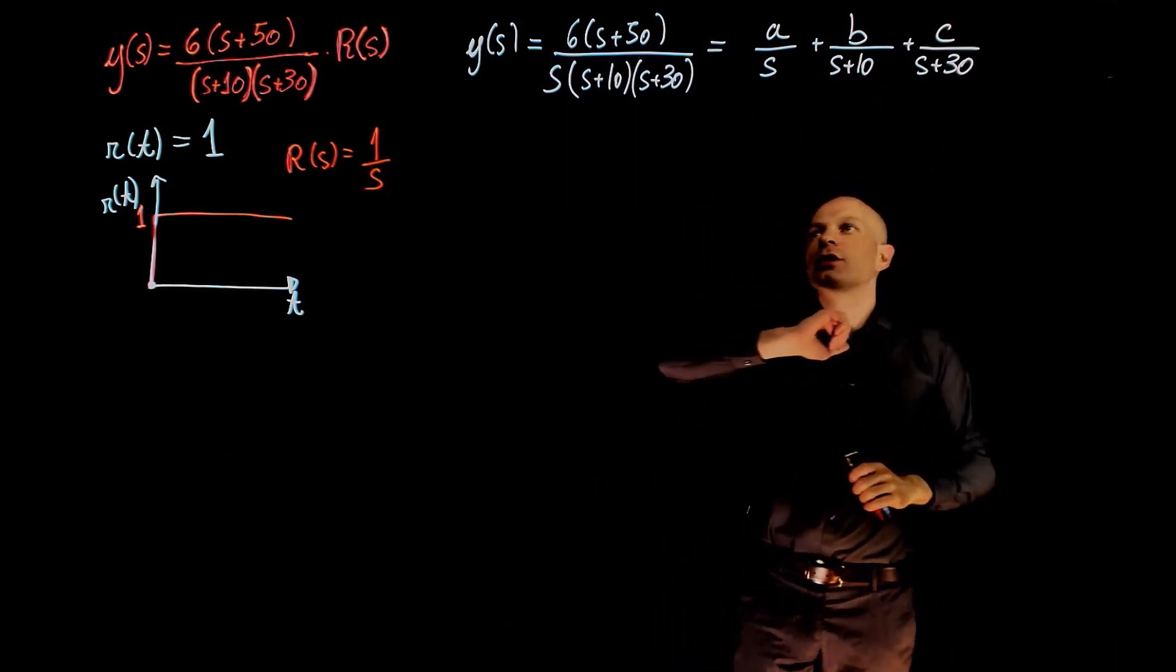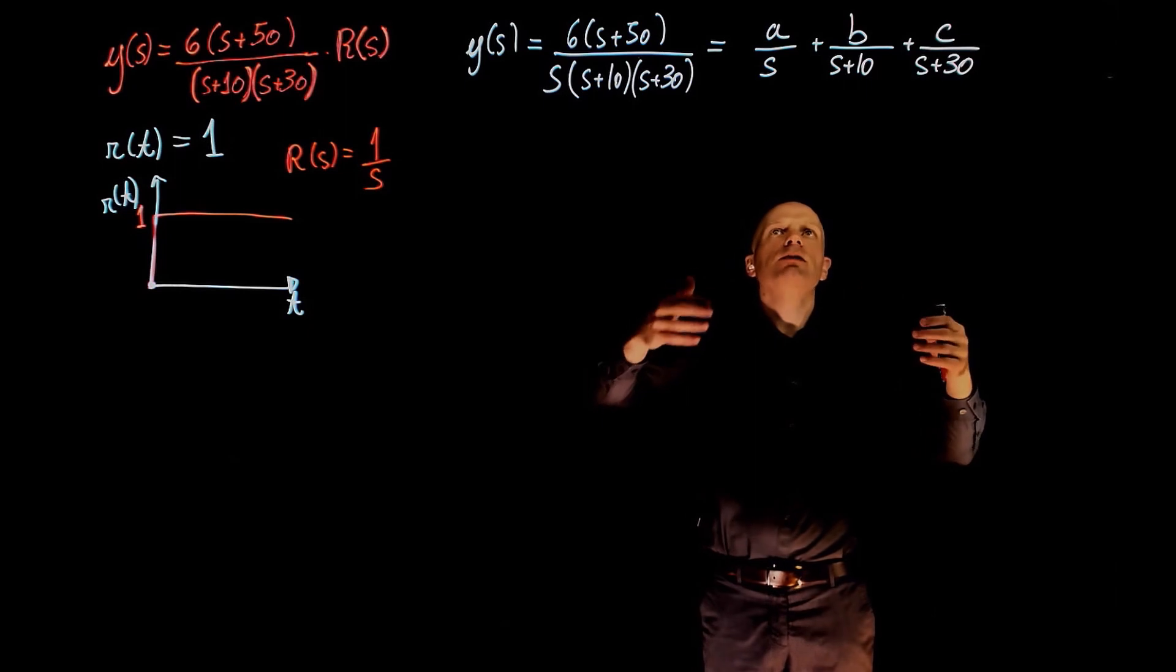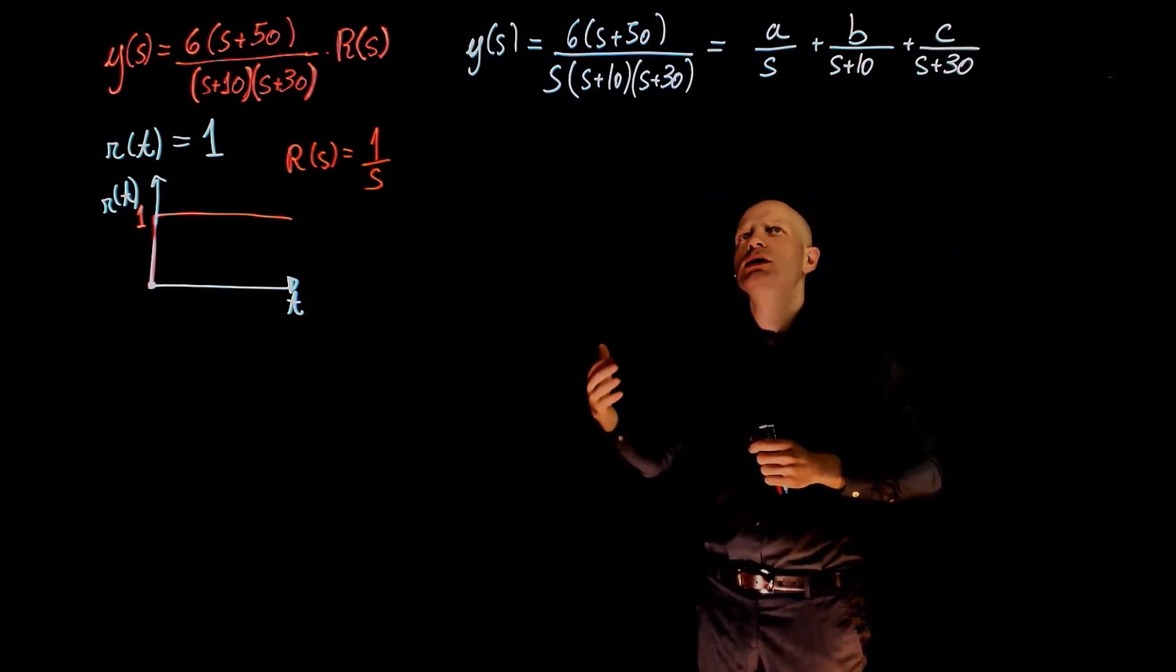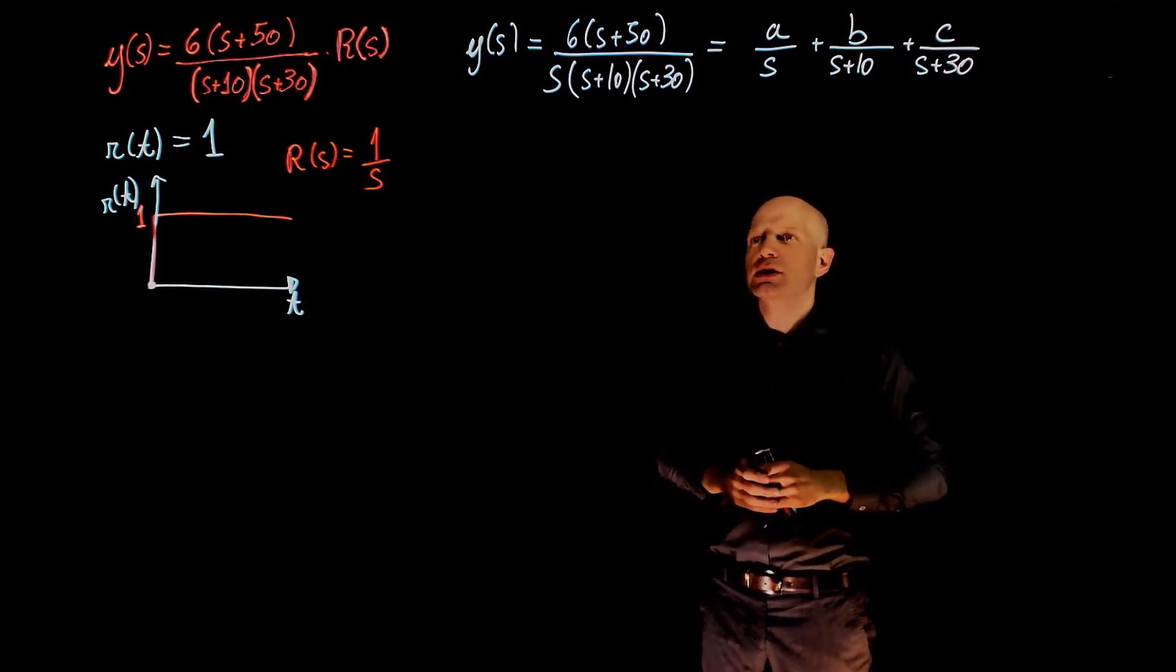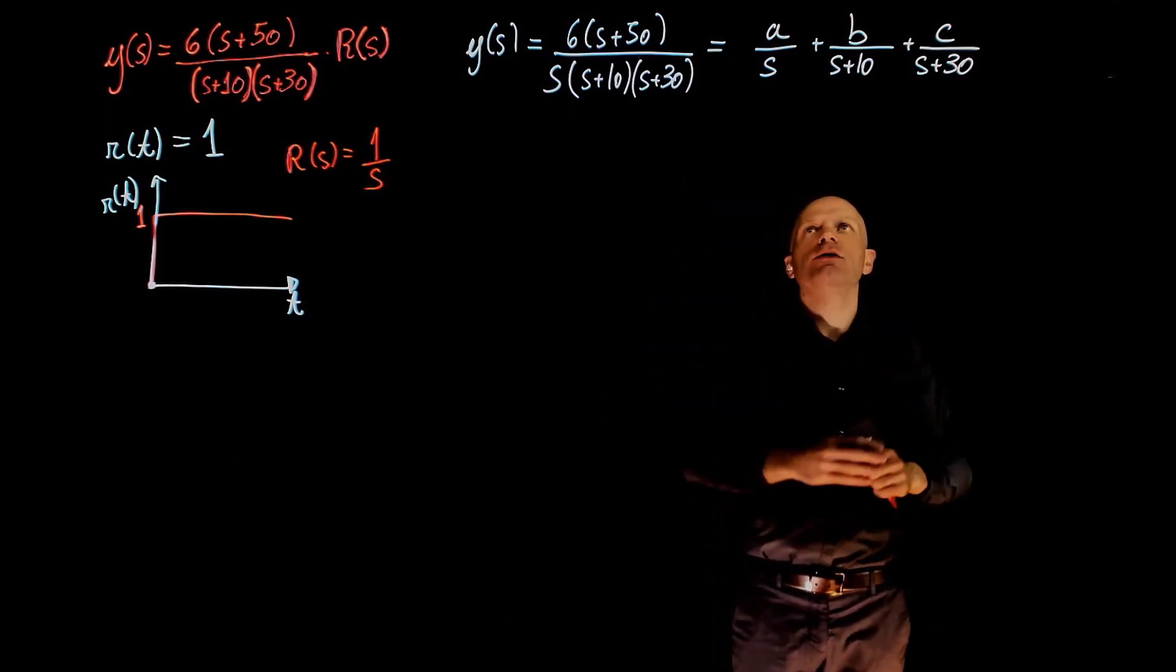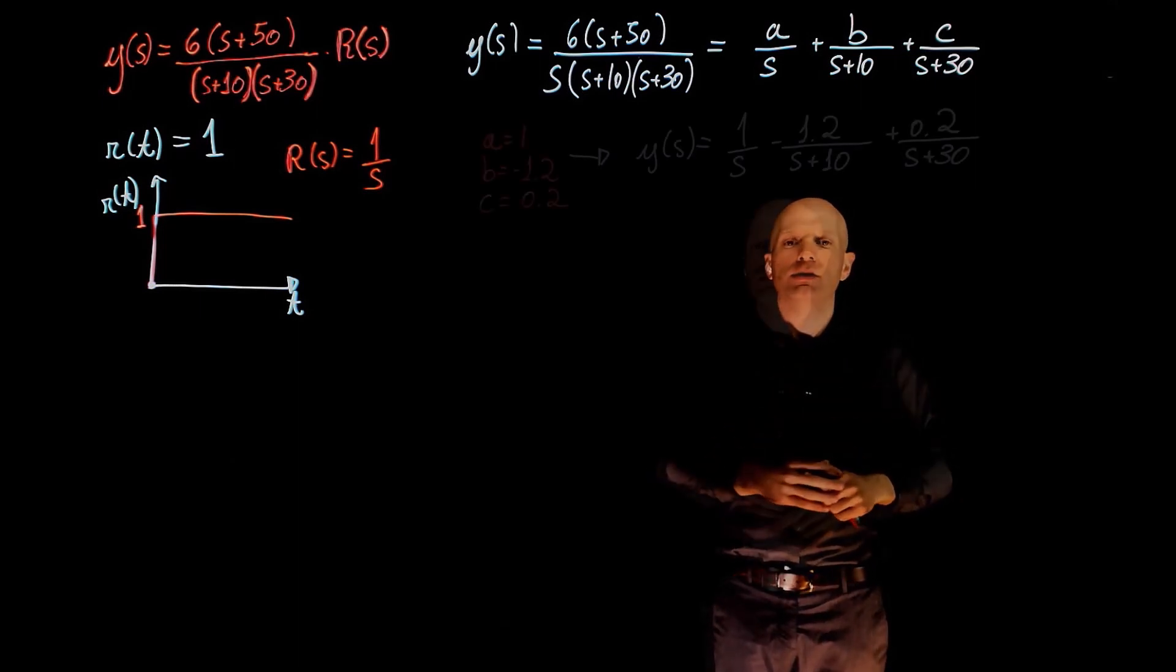We can now find a common denominator for this expression, find the system of three equations and solve for a, b, and c as we did in exercise 12. I'm going to skip that process and just give the final values for a, b, and c.